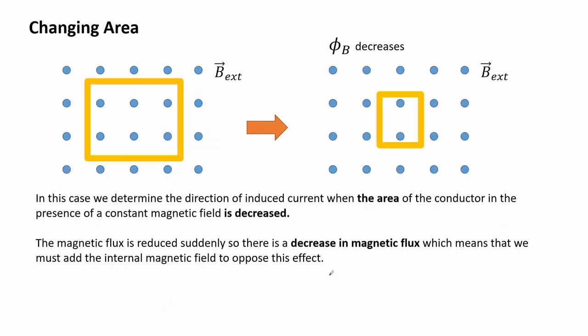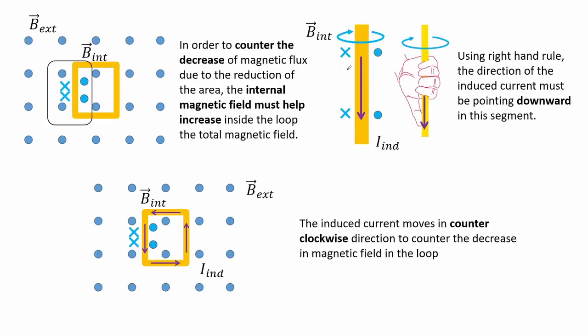In this case we determine the direction of induced current when the area of the conductor in the presence of a constant magnetic field is decreased. The magnetic flux is reduced suddenly so there is a decrease in magnetic flux, which means that we must add the internal magnetic field to oppose this effect. In order to counter the decrease, the internal magnetic field must help increase the total magnetic field inside the loop. Using the right hand rule, the direction of induced current must be pointing downward in this segment. The induced current moves in a counter-clockwise direction.